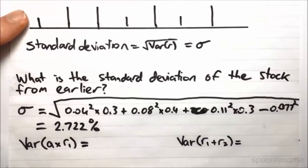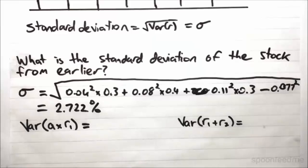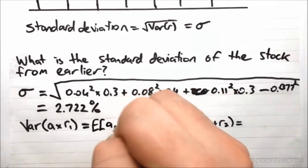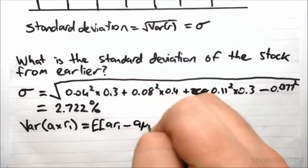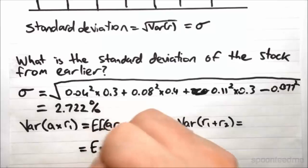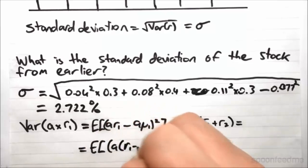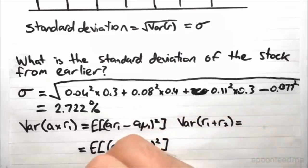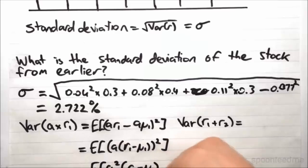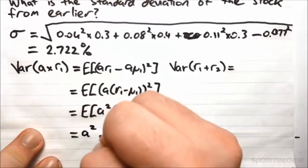So now, remember we got these results for the expected value. And we want to have a look at something similar here. So when we do this, this will be the expected value of A R1 minus A mu1, all squared. This will come out to be the expected value of A all squared, which will be A squared times R1 minus mu1 squared. A squared is a constant, so we can pull it out the front, and you get A squared times the variance.